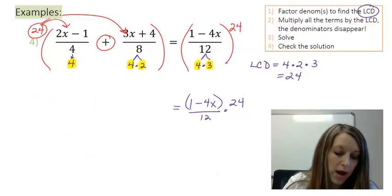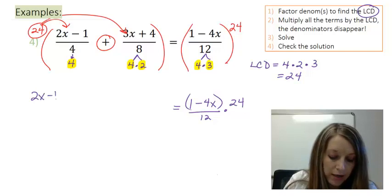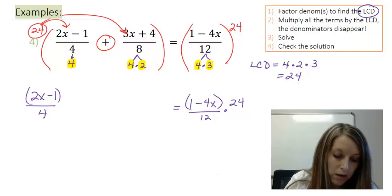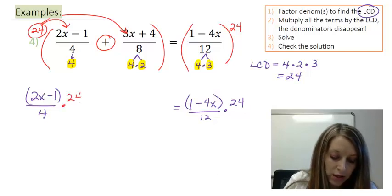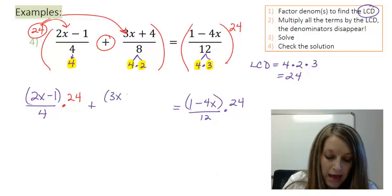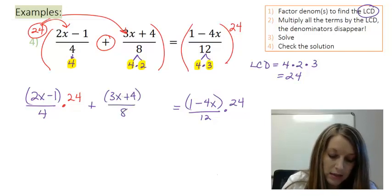So writing it out here I have 2x minus 1 all over 4 times 24 plus 3x plus 4 all over 8 times 24.